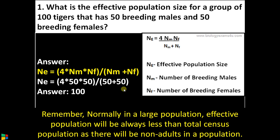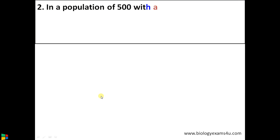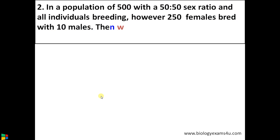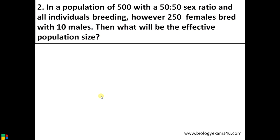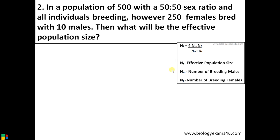Remember, normally in a large population the effective population size will always be lesser than the total population size, as there will be non-adults in a population. Now let us take one more example. In a population of 500 with a 50/50 sex ratio and all individuals breeding, however 250 females breed with only 10 males — what will be the effective population size? Let us substitute the values in that equation.